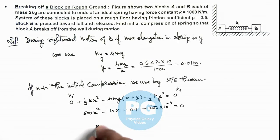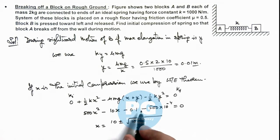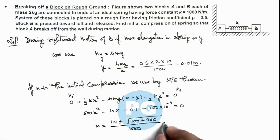So on simplifying the value of x we can get from the quadratic equation, so this will be minus b is 10 plus minus root of b squared is 100 minus 4ac that we can take as 4 times 500 multiplied by 0.15, so the value here will be plus 300 divided by 1000. So on simplifying we are getting 10 plus minus 20 by 1000.